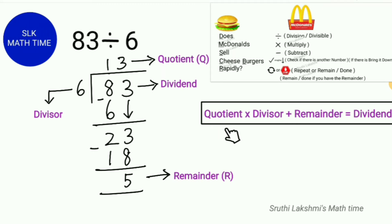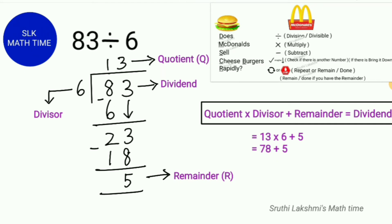The quotient is 13 and the divisor is 6. So 13 times 6 plus the remainder 5: 13 times 6 is 78, and 78 plus 5 is 83, which is the dividend. We do this to check if our answer is right — and since we got 83, this is correct.